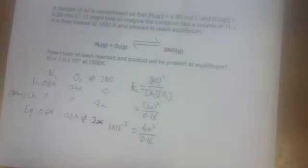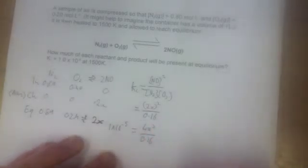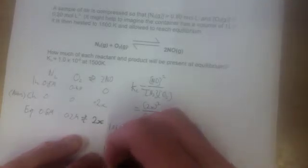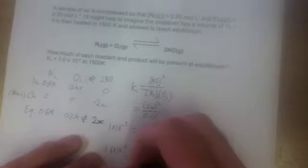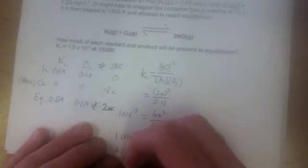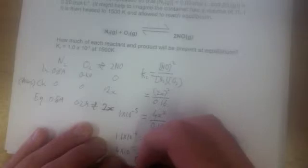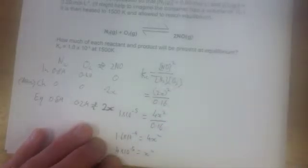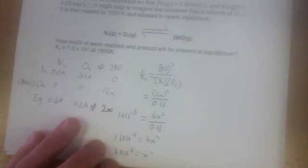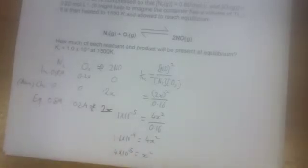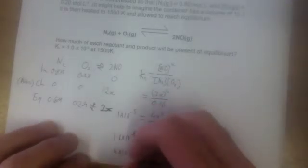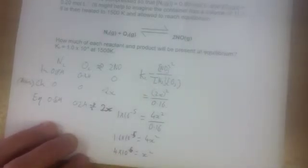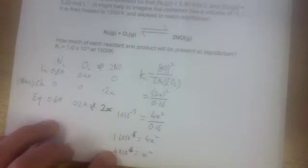We solve for what x is. And we look at it and we end up with, so we get 1.6 times 10 to the power of negative 6 equals 4x squared. Divide that by 4, we get 4 times 10 to the power of negative 6 equals x squared.